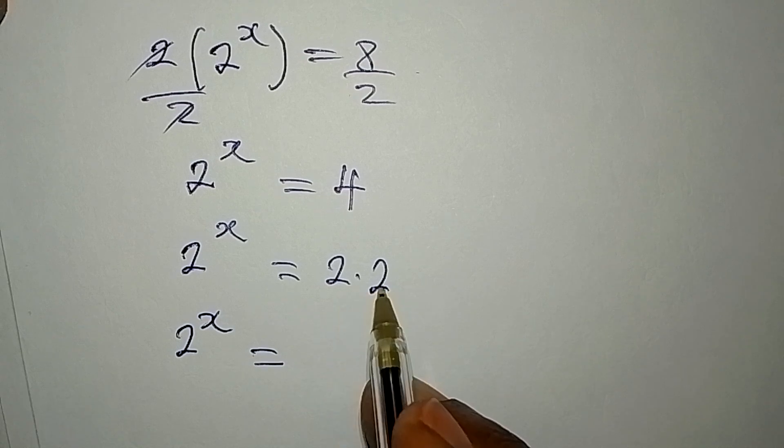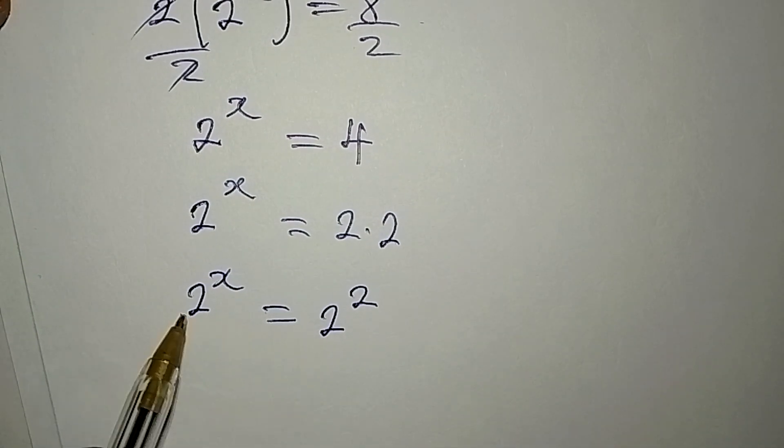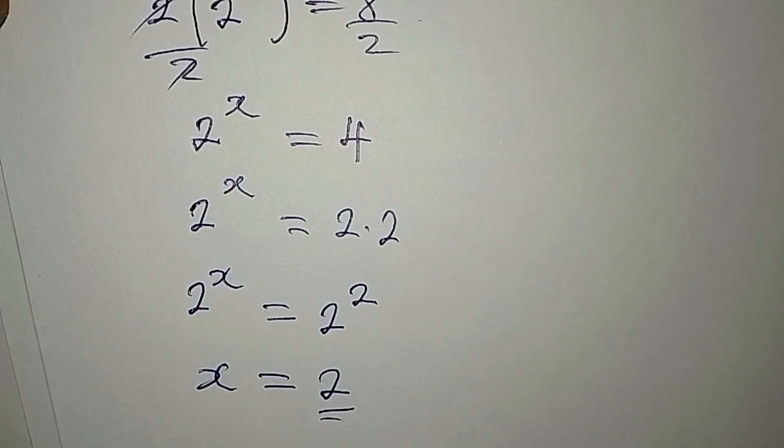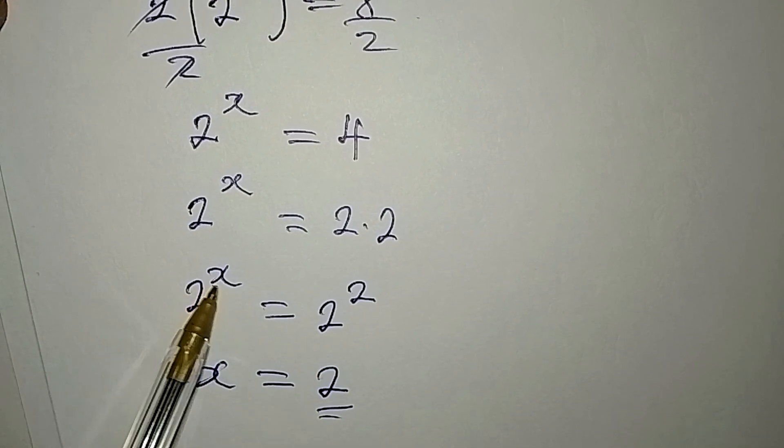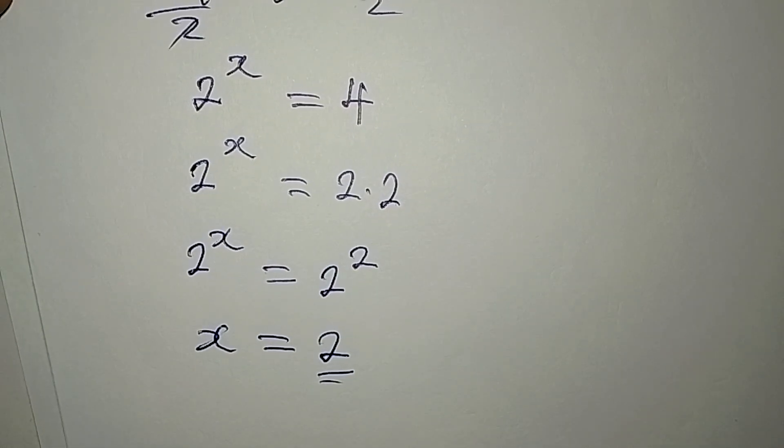2 to the power of x is equal to 2 times 2, that would be 2 to the power of 2. Now we have the same base, therefore our x is equal to 2, because if the bases are equal then the powers should also be equal. Thank you for watching, God bless.